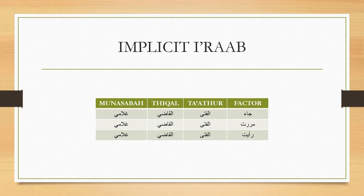Likewise, مررت بالفتى — الفتى here is a مجرور وعلامة جره الكسر المقدّرة. The كسر is implicit; what prevented it from being made explicit is التعذّر. In رأيت الفتى, الفتى is a مفعول به, منصوب, وعلامة نصبه الفتحة المقدّرة — an implicit فتح, also prevented by التعذّر.